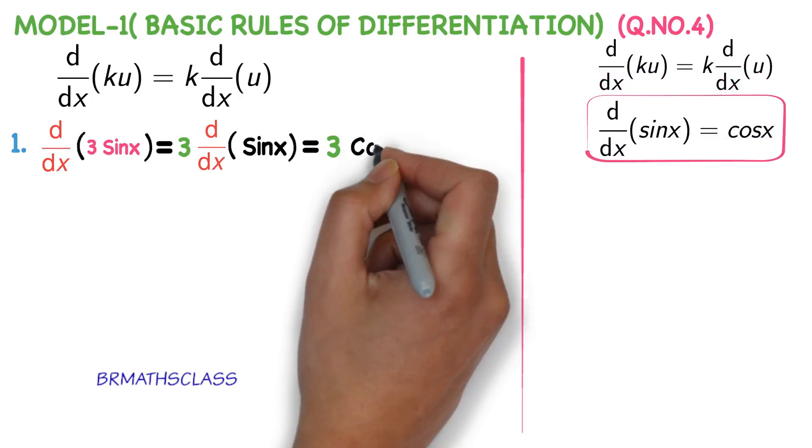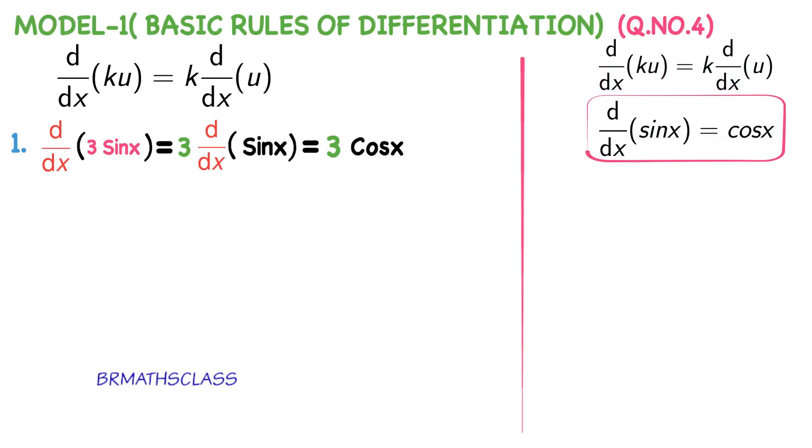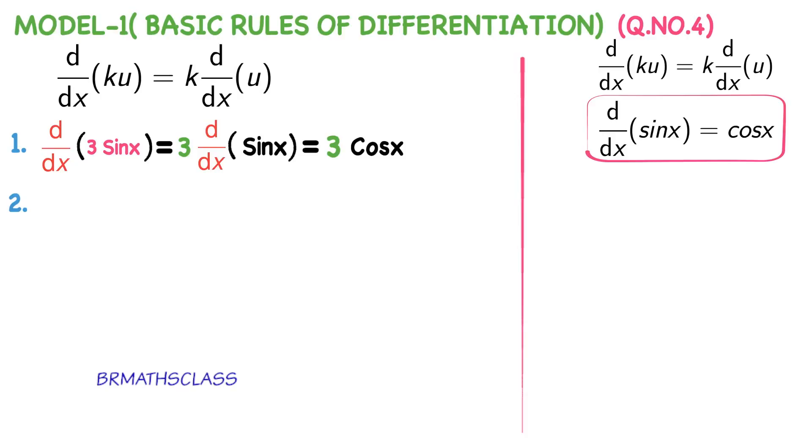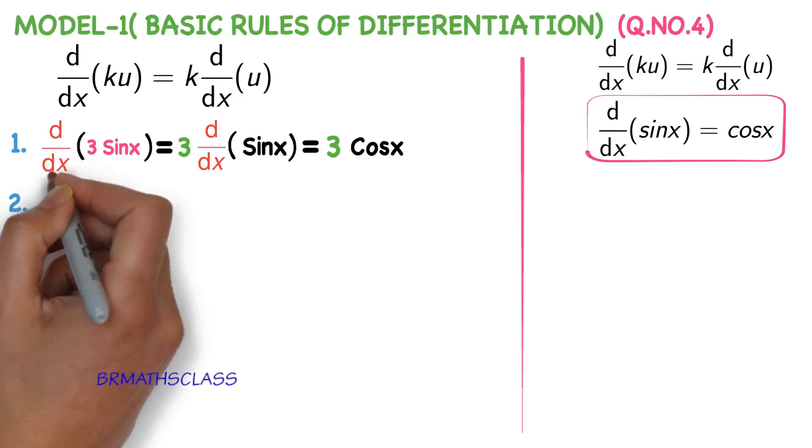3 into derivative of sin x is cos x. So, derivative of 3 sin x is 3 cos x.